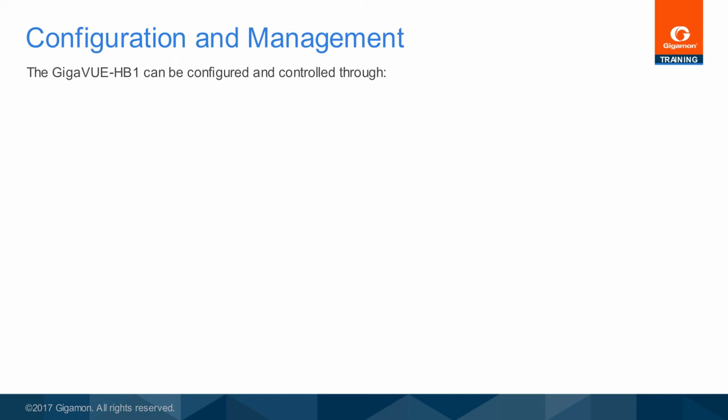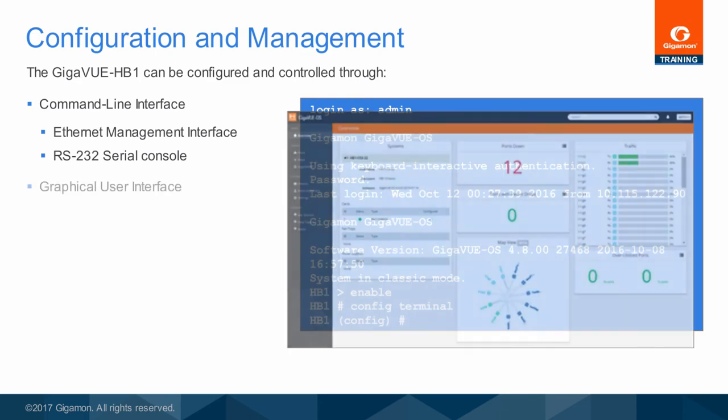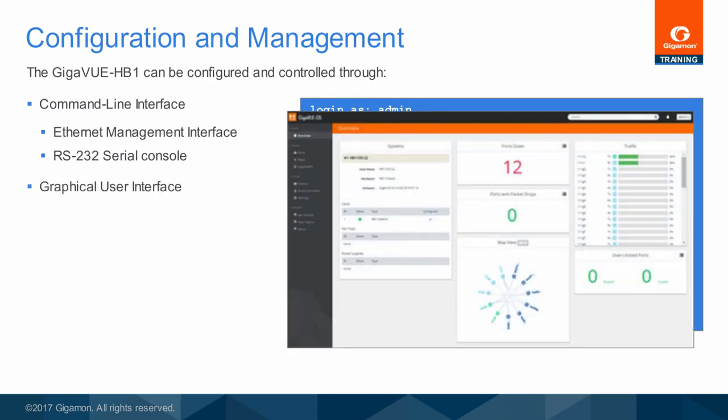The Gigaview HB1 can be configured and controlled through the following interfaces. The Command Line Interface (CLI) is accessed through an SSH or Telnet session on the Ethernet Management Interface, or via the RS-232 serial console. The console session supports scripting too. The Ethernet Management Interface on a single node may also be accessed using HTTP or HTTPS from a web browser, where the H-VUE graphical user interface is presented.